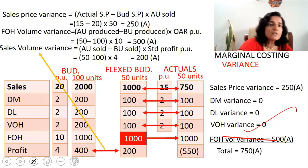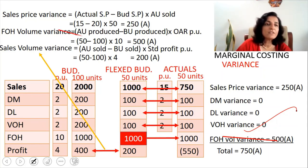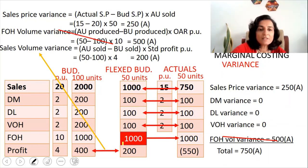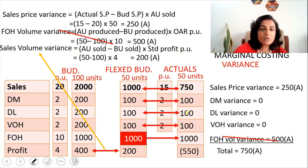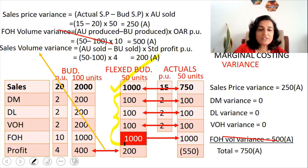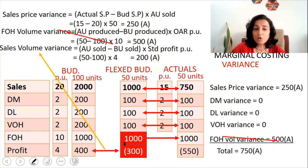So we don't have a fixed overhead volume variance under marginal costing. Instead of $500, the fixed overheads in both the original and flexed budgets will be $1,000. Since the fixed overheads have changed, the profit as per the flexed budget will also change. The revised profit will be sales $1,000 minus expenses of $1,300, ending up with a loss of $300.